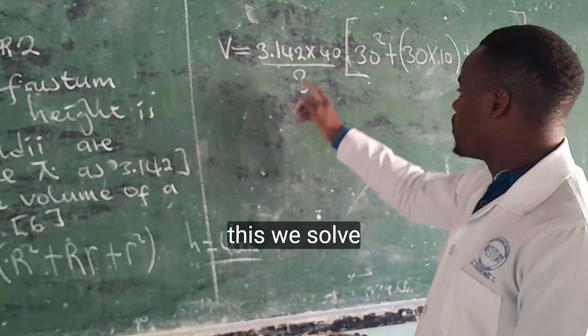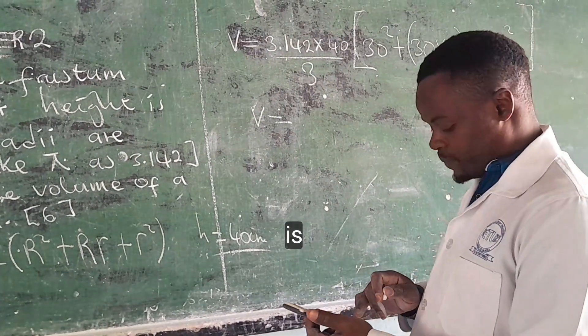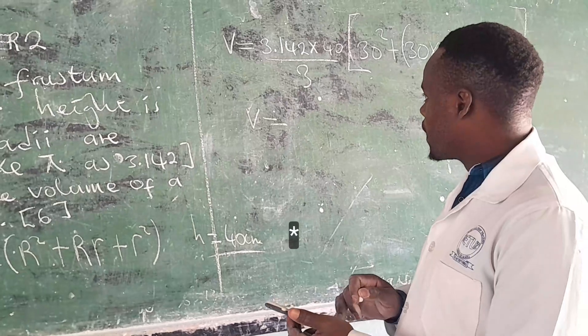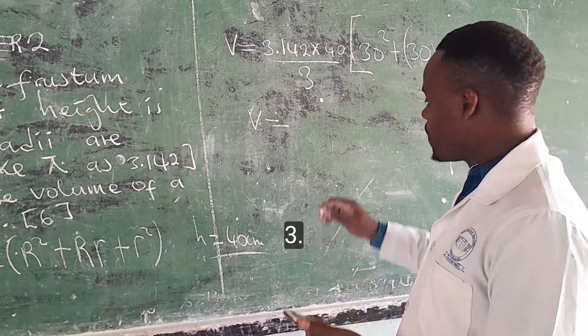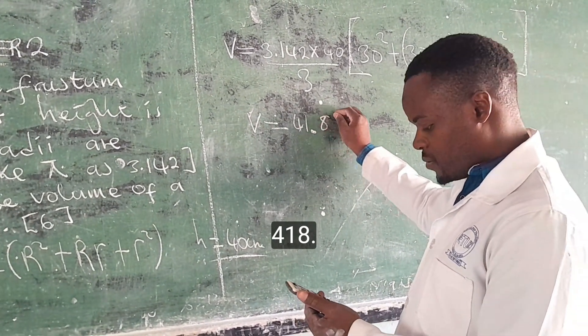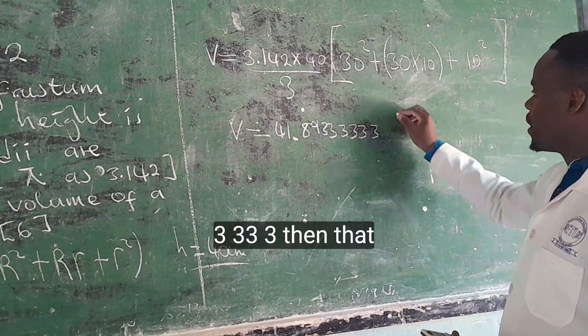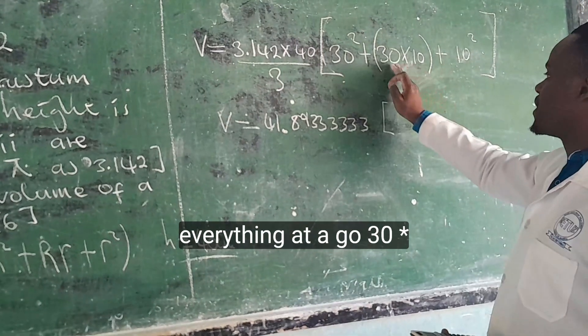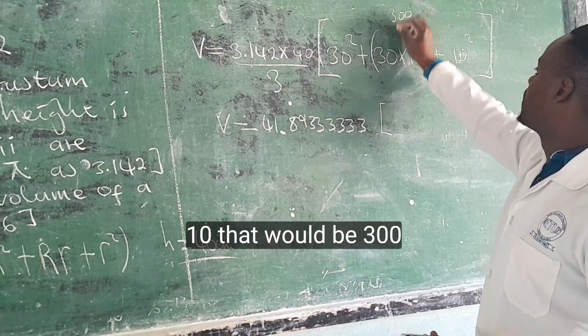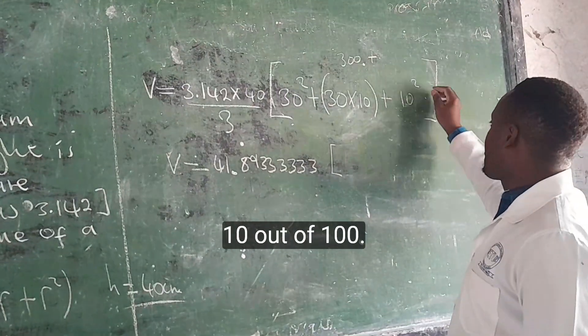So we can work out this. That would be V is equal to, multiply these outside, that is 3.142 times 40 over 3, that's 41.89333333. Then that has to be multiplied by what's on the inside. So we can punch everything that it goes. 30 times 10, that would be 300. Then 10 times 10, mostly people make a mistake. Instead of expanding this, they add them. 10 plus 10 is 10 times 10, that would be 100.